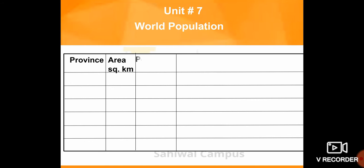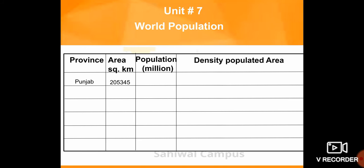From the table, we will learn about the density and distribution of population. The first province is Punjab. The area of Punjab is 205,345 square kilometers. The population of Punjab is 96.6 million. The populated areas of Punjab are Lahore, Faisalabad, Multan, Gujranwala, and Rawalpindi.